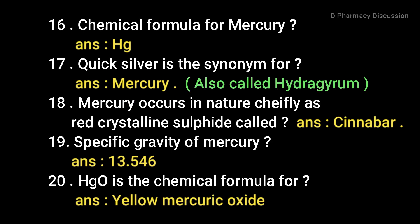The chemical formula for mercury is Hg. Quicksilver is the synonym for mercury, and it is also called hydrargum. Mercury occurs in nature chiefly as a red crystalline sulfide called cinnabar. The specific gravity of mercury is 13.546. HgO is the chemical formula for yellow mercury oxide.